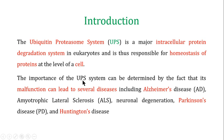The importance of the UPS system can be determined by the fact that its malfunction can lead to several important diseases including Alzheimer's disease, amyotrophic lateral sclerosis, neuronal degradation, Parkinson's disease, and Huntington's disease.